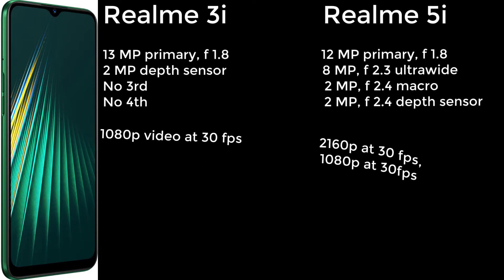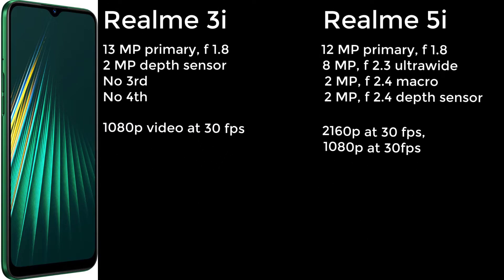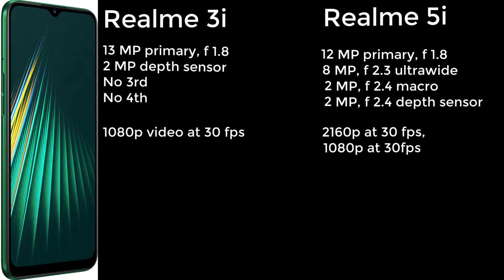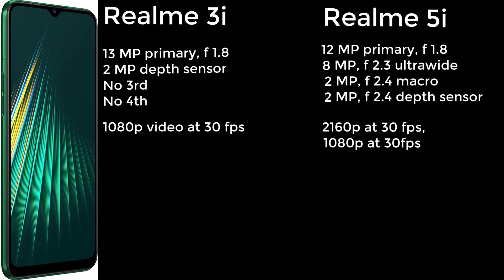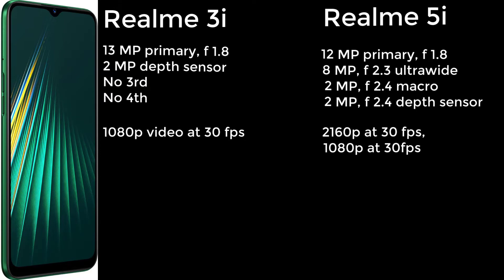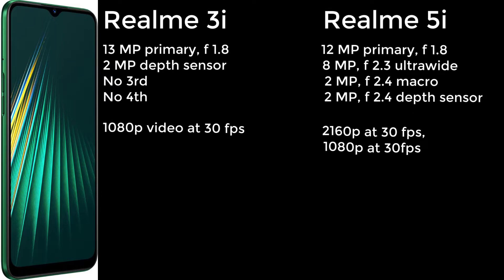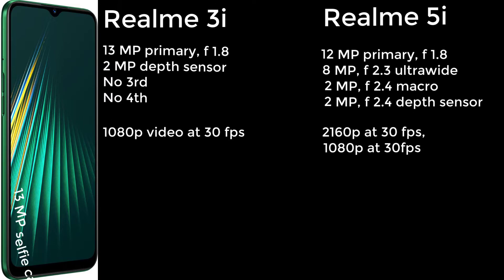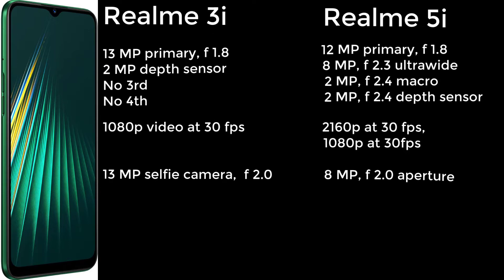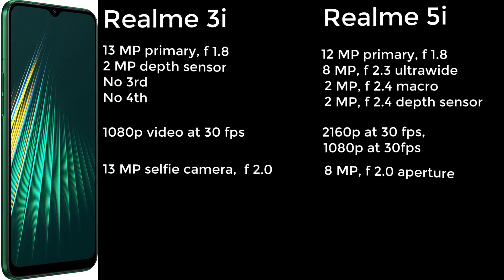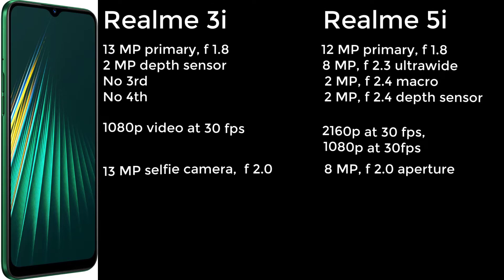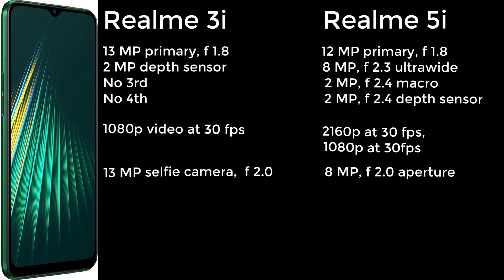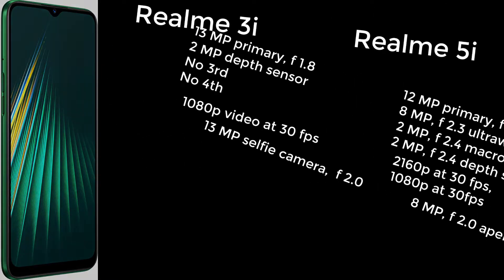The 3i main camera can record 1080p video at 30 fps, whereas the 5i main camera records 2160p at 30 fps and 1080p at 30 fps. The 3i selfie camera is 13 megapixels with f/2.0 aperture, whereas the 5i has an 8-megapixel selfie camera with f/2.0 aperture.